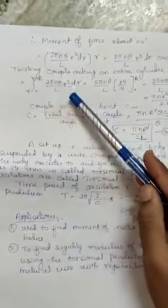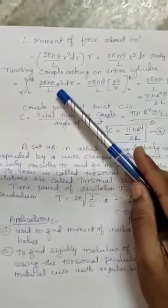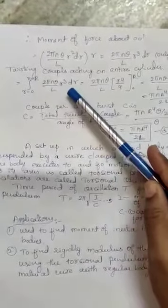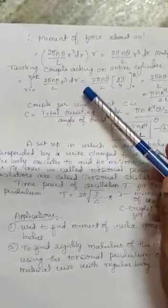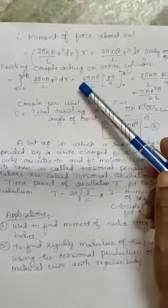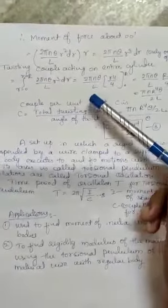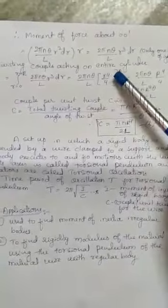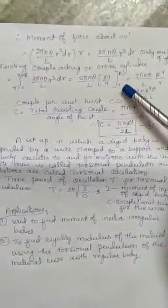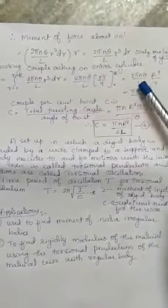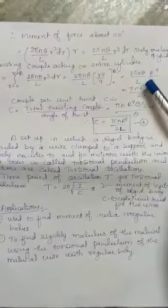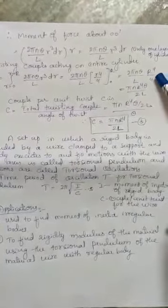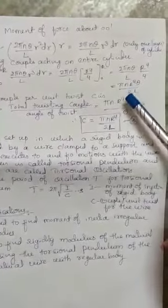So that is equal to 2πnθ/l × r⁴/4, that is 0 to R. So it becomes 2πnθ/l × r⁴/4. So final expression will be πnR⁴θ/2l.